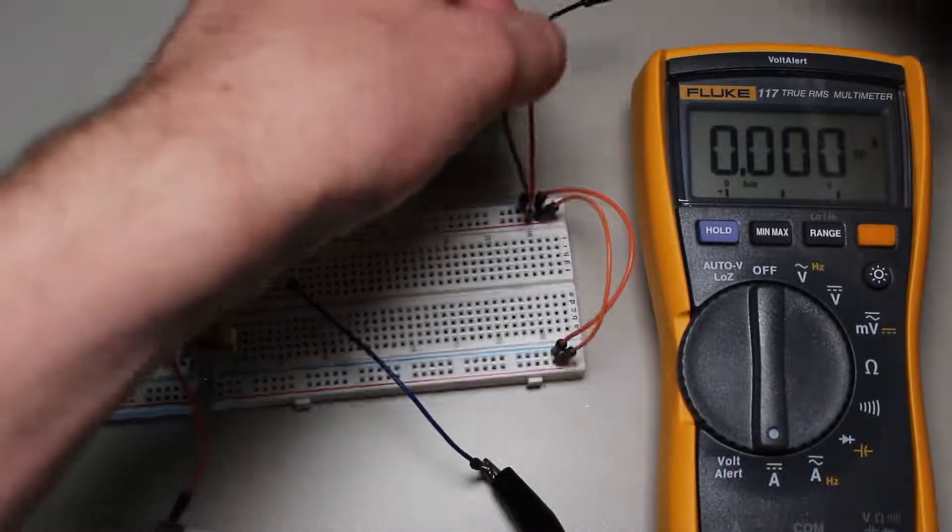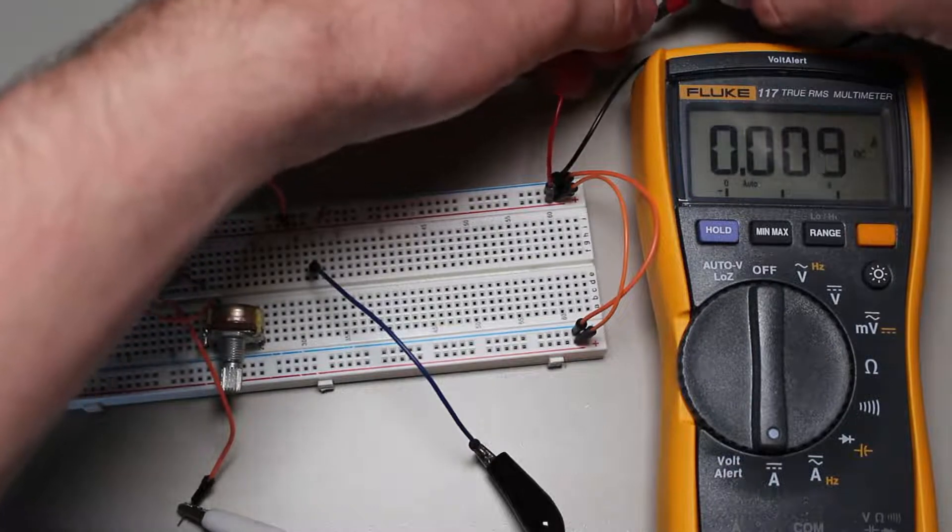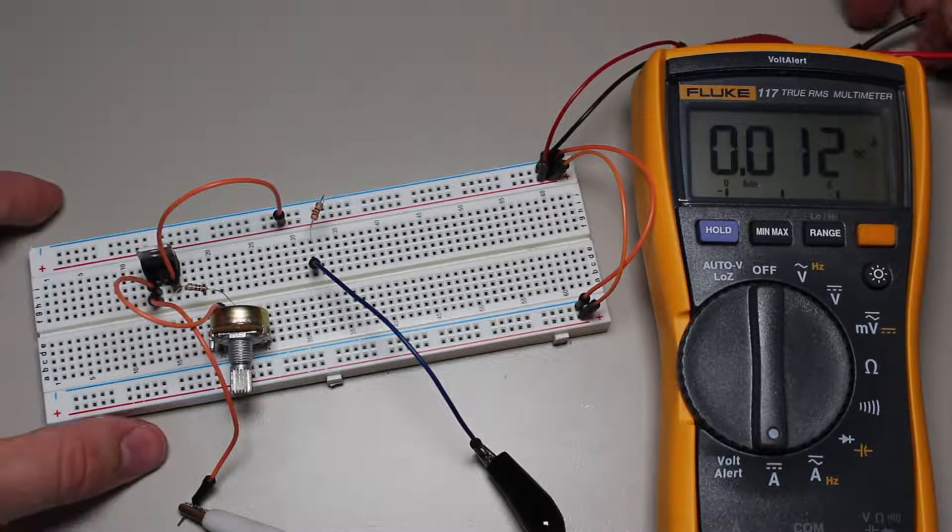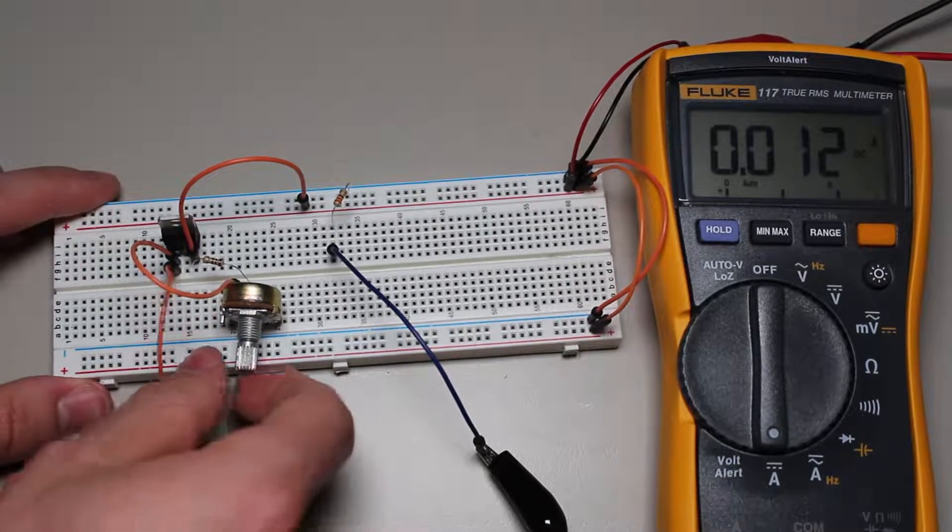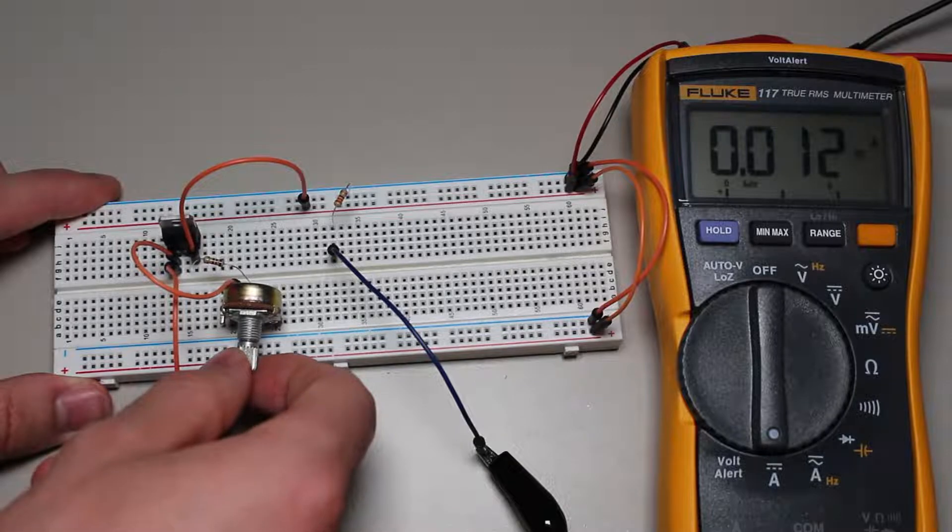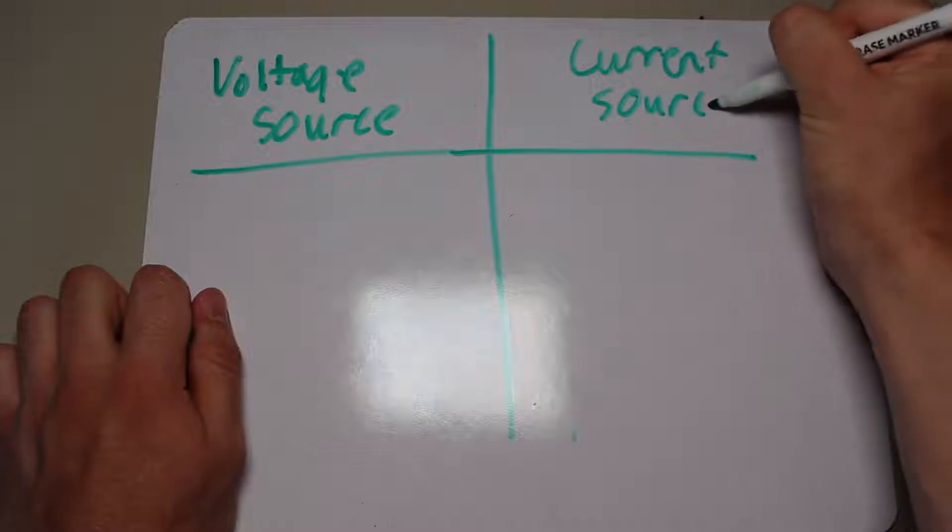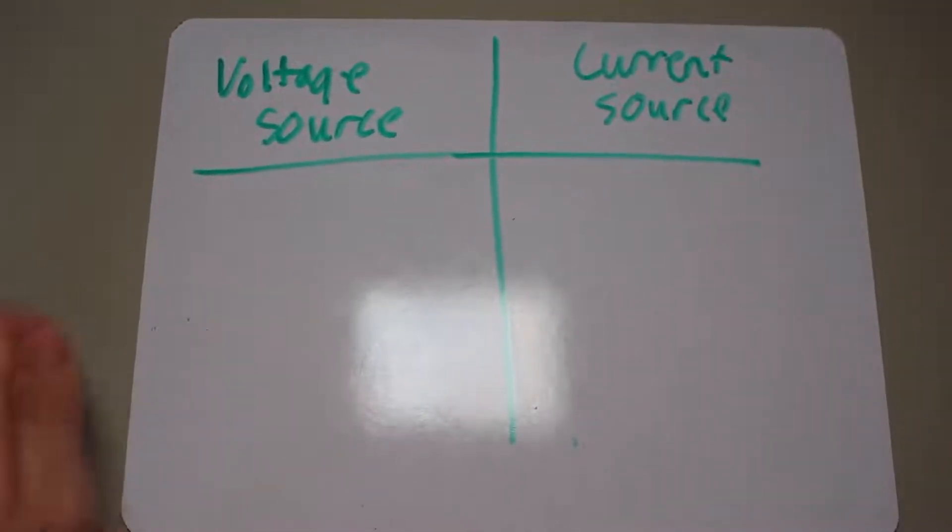Now, for an interesting application of the LM317, its ability to be a current source. Now, typically, the LM317 is used as a voltage source, but with the proper external components, you can turn it into a current source. Before I explain how to make that current source, I will explain the difference between a voltage and a current source, since current sources are not nearly as common as voltage sources.